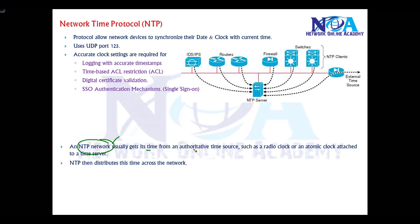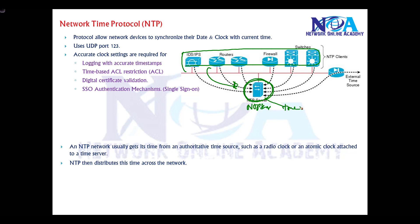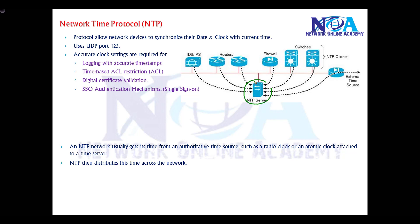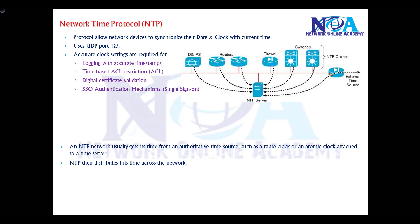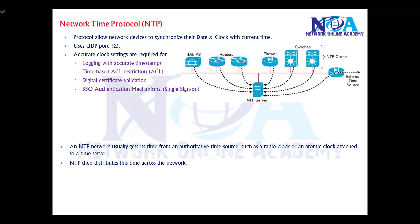NTP network usually gets its time from a source. To have proper synchronized time, we configure a device as an NTP server and expect all devices to contact it and synchronize their time. We can use our own internal server — selecting any router, server, PC, or device as the NTP server — or configure an external time source on the internet. The NTP server gets time from an authoritative time source like a radio clock or atomic clock, and is responsible for distributing that time across the network to NTP clients.